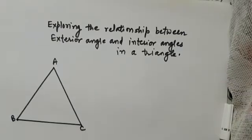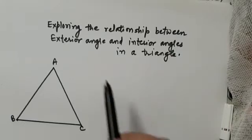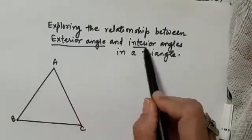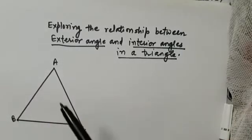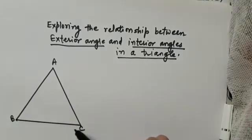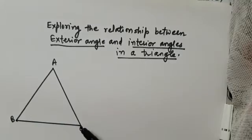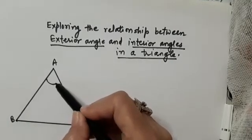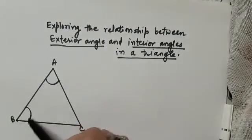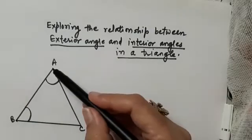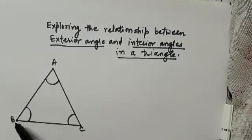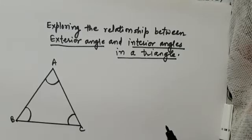Hello dear students, today we are going to learn an interesting activity which is on exploring the relationship between exterior angles and the interior angles in a triangle. Here you can see that triangle ABC has been drawn. It has vertices A, B, and C, and we can see that there are three interior angles: angle CAB, angle ABC, and angle ACB. Now, how do we draw the exterior angle?